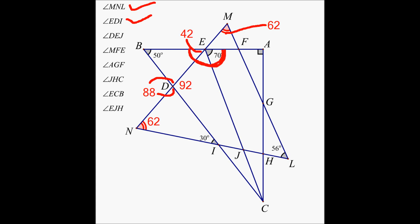These three angles should add up to 180 degrees. I know two of those three angles. So from 180, if you subtract 42 and then subtract 70, you are going to get angle DEJ. From 180 minus 70 is 110, and from 110 minus 42 is 68. So this has to be 68.